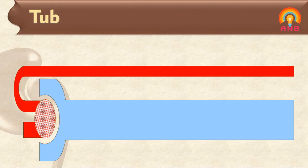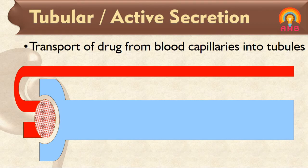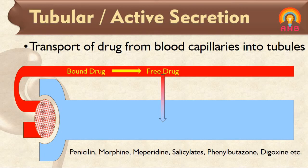Next, tubular secretion means active transport of drug from blood capillaries into the renal tubules. This may decrease the concentration of free drug in the blood, and to attain equilibrium, bound drug dissociates from the protein and becomes free, which is again actively transported into the renal tubules. Thus tubular secretion helps in elimination of drugs. Drugs excreted through urine include penicillin, morphine, meperidine, salicylates, phenylbutazone, and digoxin.